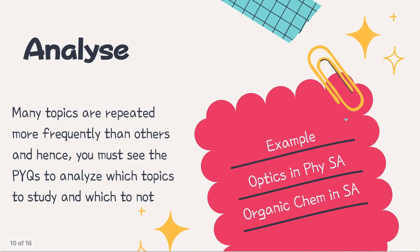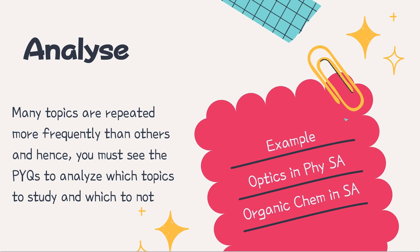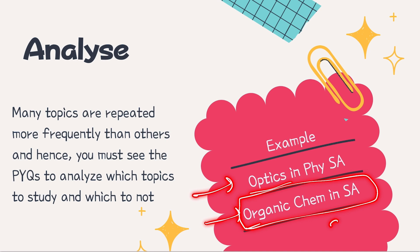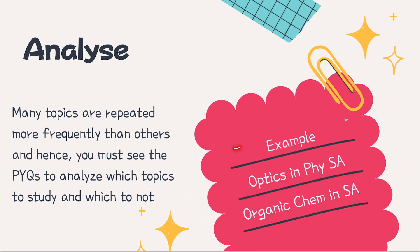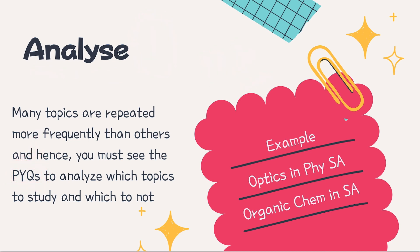The first piece of advice is that many topics are repeated more frequently than others, so you have to do a proper analysis of previous year questions. For example, Optics is a chapter in physics which is frequently tested. For SA it is 11th class level, for SX it is 12th class level. In chemistry, organic chemistry is frequently tested. So the first step is analysis — to see what you need to study for KVPY.